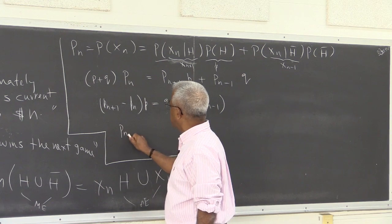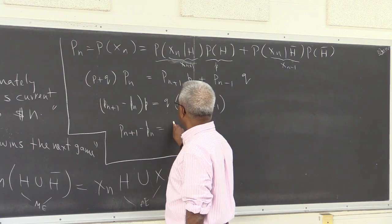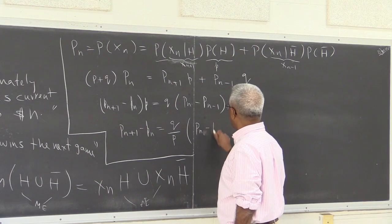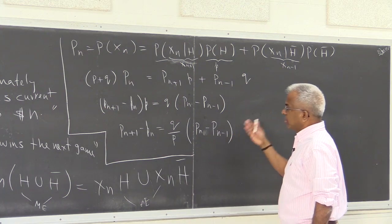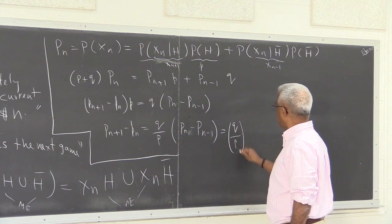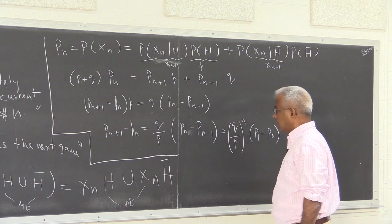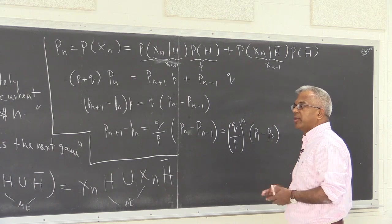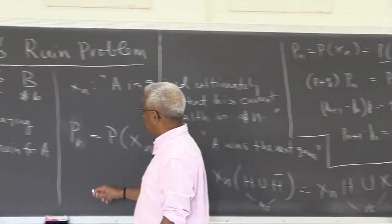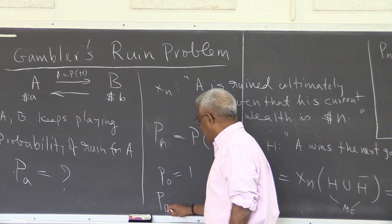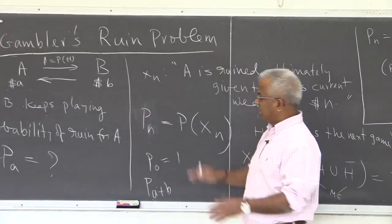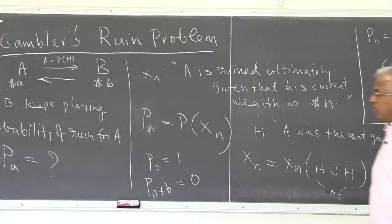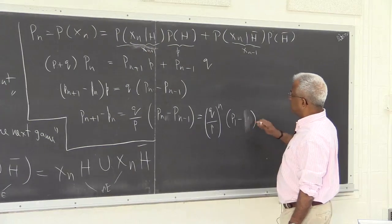Notice that you can iterate this, so it becomes (Q/P)^n · (P1 − P0). Now P0 — the probability of A being ruined when his wealth is 0 — is physically clearly 1, so P0 = 1. Similarly, A has $a and B has $b. If at any point A has $(a+b), there is no more game and no way to get ruined. These are the initial conditions, so P(a+b) = 0.